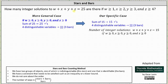Using the stars and bars method, because the sum is 25, or because we can think of having 25 indistinguishable ones, we have 25 stars. And because we have four distinguishable variables, we have three bars. Remember, each bar represents a switch from one variable to the next. So if we have four variables, we need three switches. The number of bars is always one less than the number of distinguishable variables, or more generally, distinguishable objects.